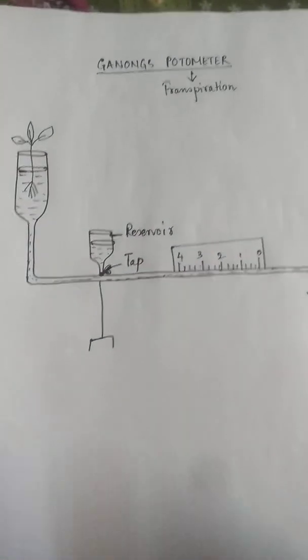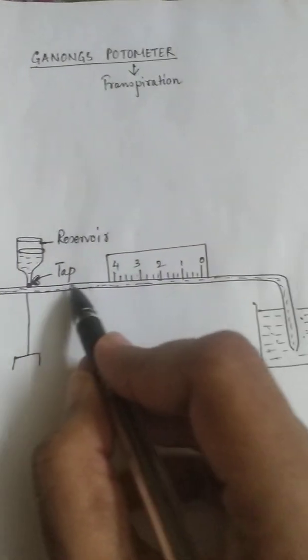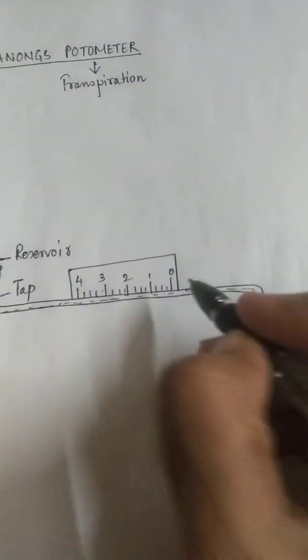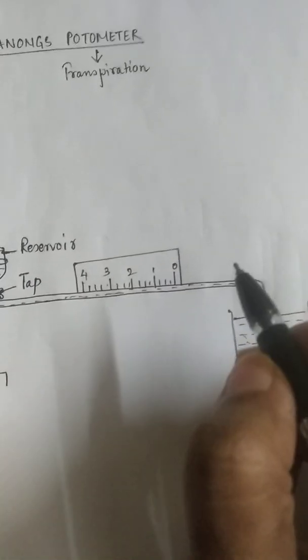And another thing this Ganong potometer should have is that inside this potometer inside this long slender pipe I must have an air bubble inside.